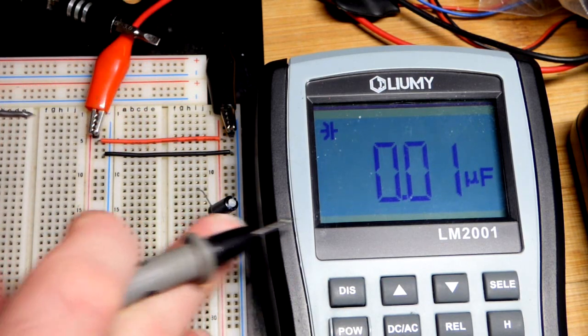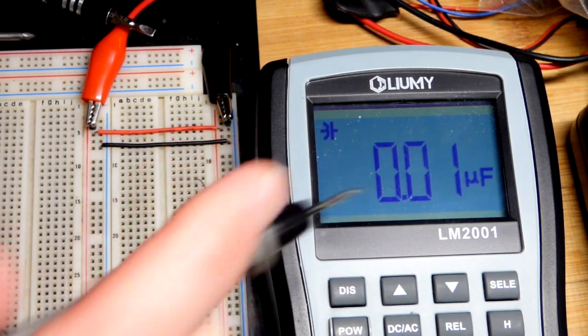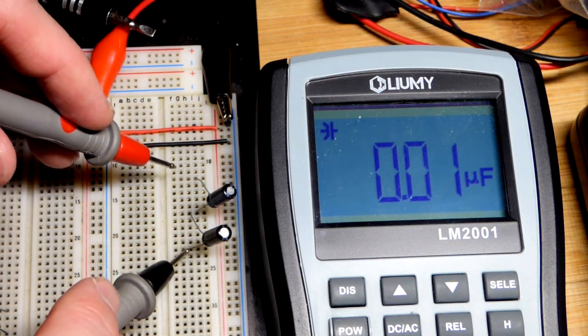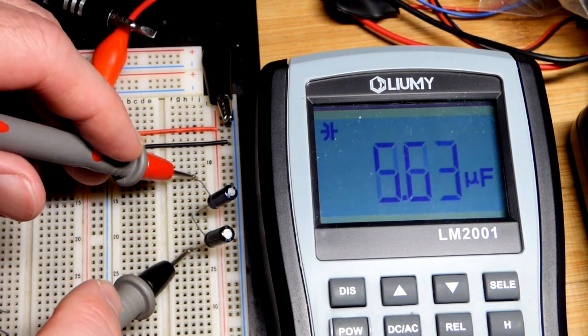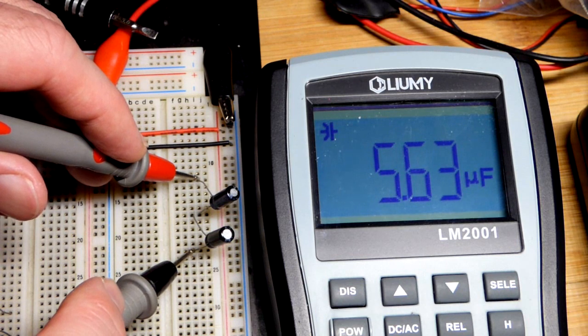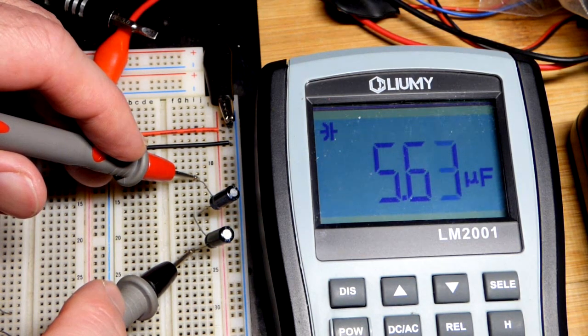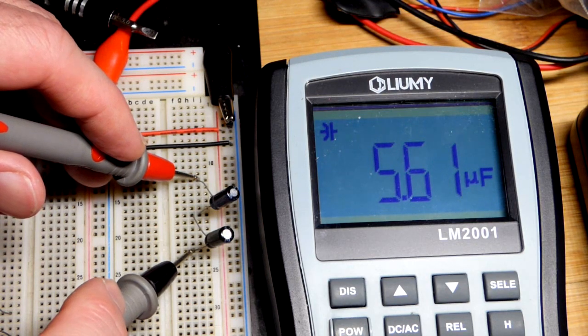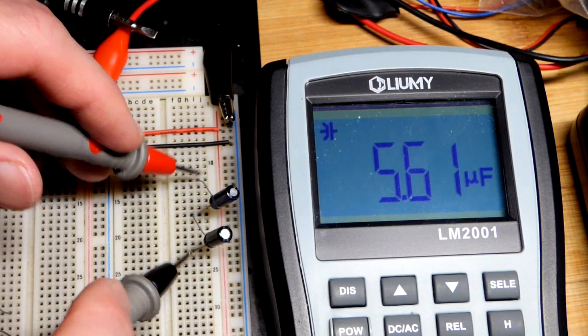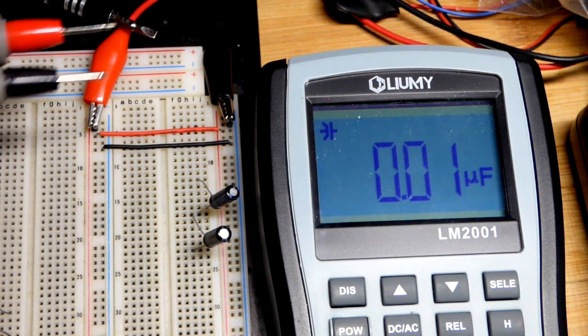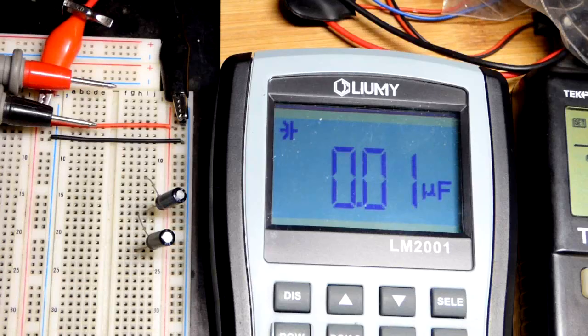This is going to measure the two of them, and you're going to see instead of above 11, now we got about five and a half for the two of them in series. When you put capacitors in series, their capacitance actually goes down.